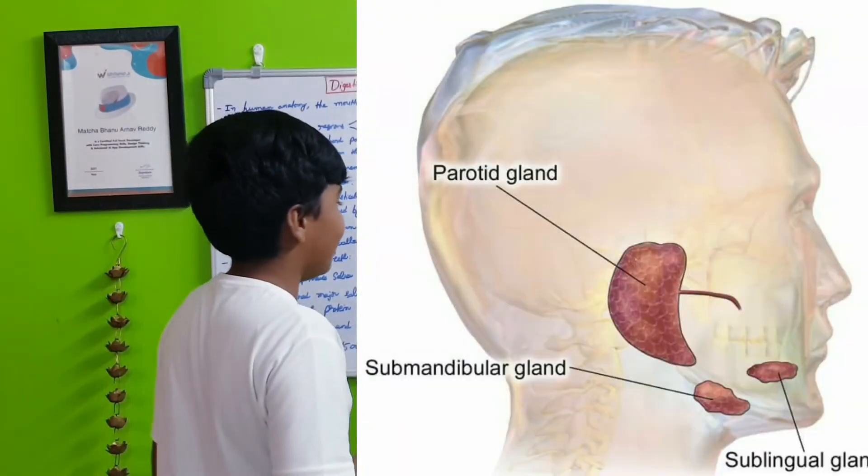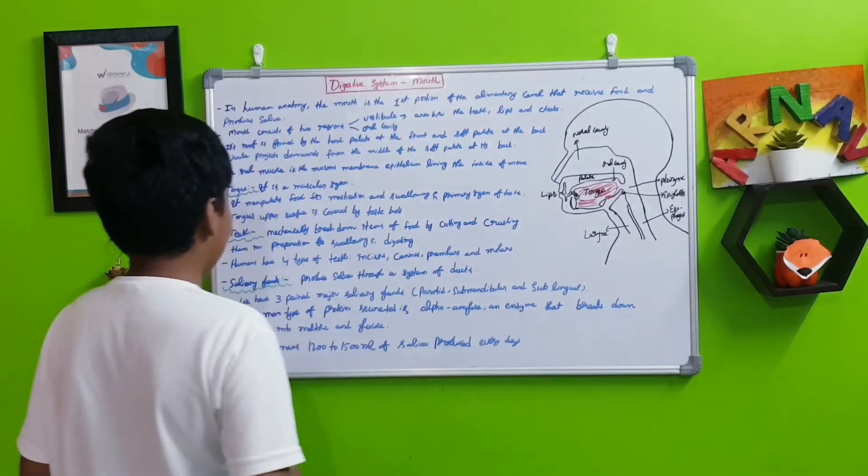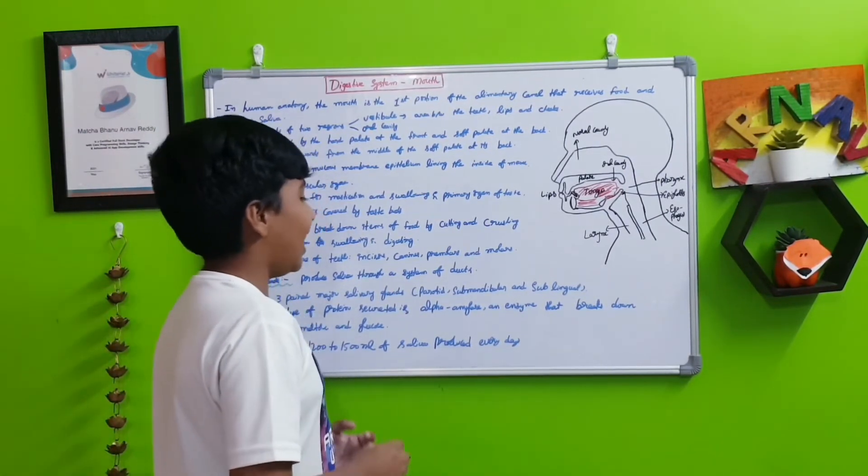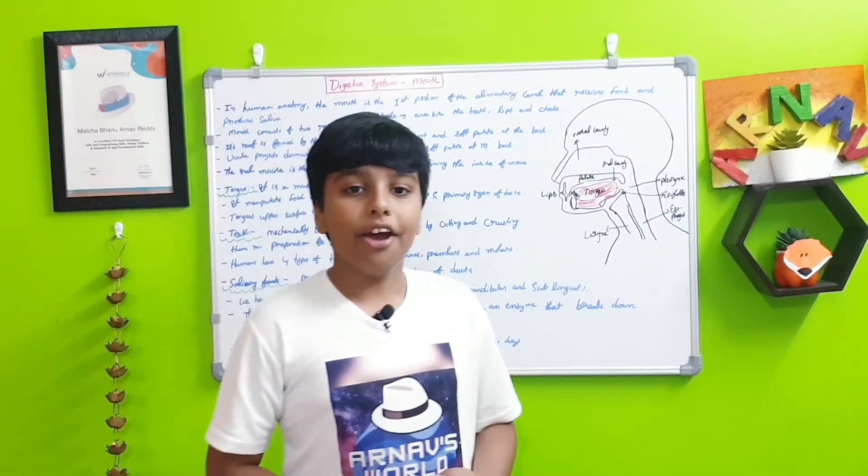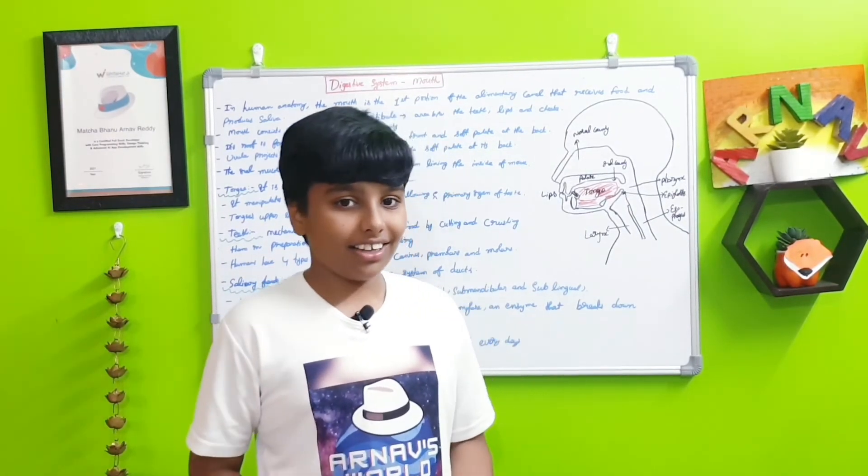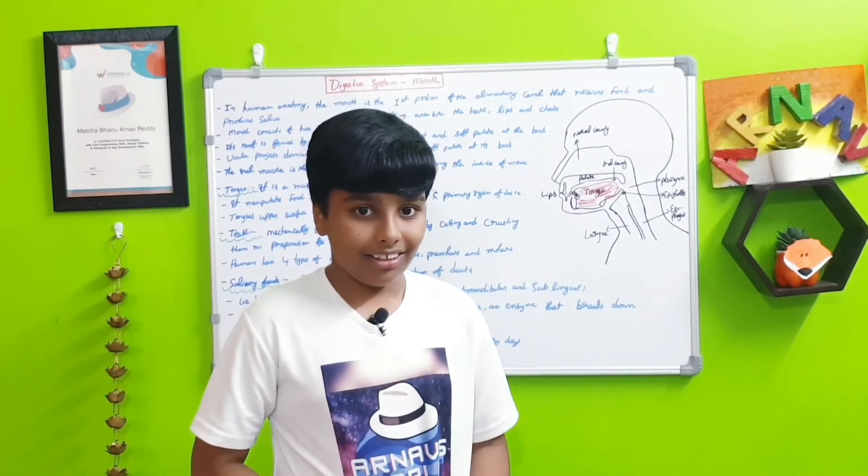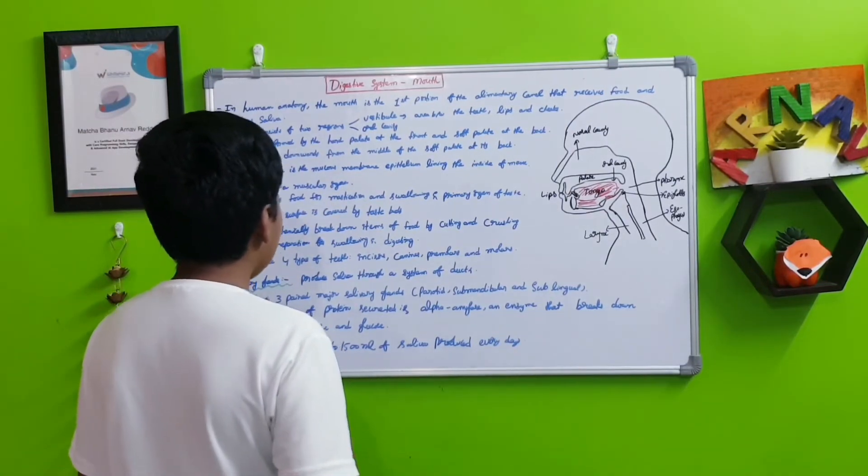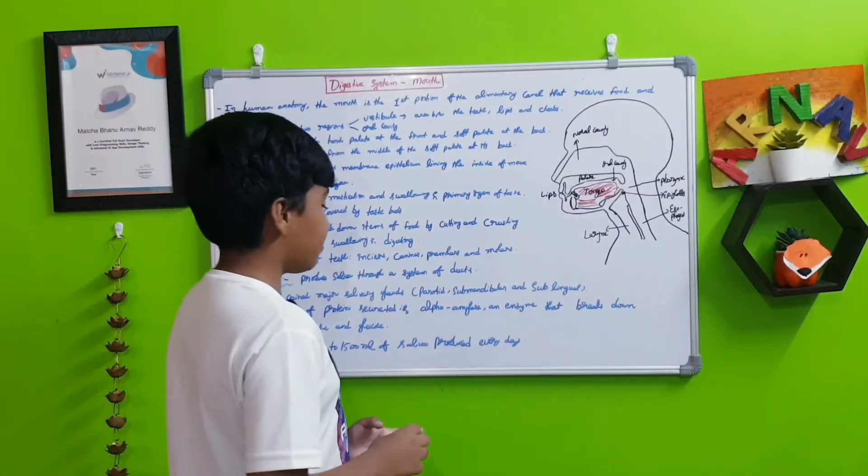The main type of protein secreted is alpha-amylase, an enzyme that breaks down starch into maltose and glucose, which then can be used by the body for doing other things. The main function of glucose is to make energy. In humans, 1,200 to 1,500 milliliters of saliva is produced every day, that means more than one liter.